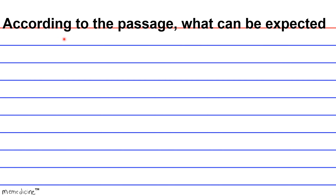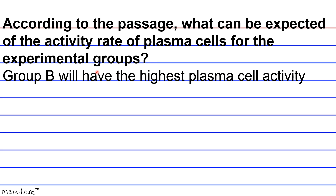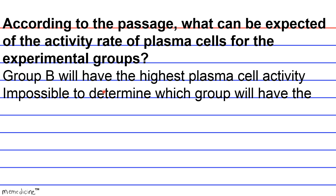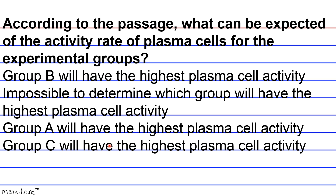According to the passage, what can be expected of the activity rate of plasma cells for the experimental groups? A — Group B will have the highest plasma cell activity. B — Impossible to determine which group will have the highest plasma cell activity. C — Group A will have the highest plasma cell activity. D — Group C will have the highest plasma cell activity.